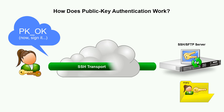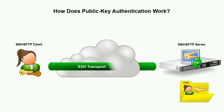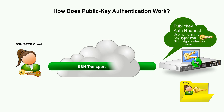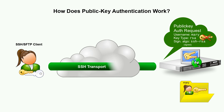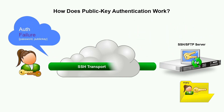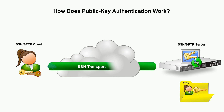If the client receives an OK message, it will subsequently send another Public Key authentication request, this time using the private key to sign the request. The server uses its copy of the public key file to verify the client's signature — a verification step that can only succeed if the signature was done using the private key generated when the key pair was originally created. If the signature does not compute, the authentication attempt is rejected with a failure. If the signature is correct, the server lets the client know that Public Key authentication was successful.